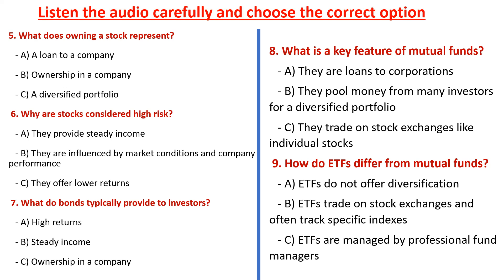Second, bonds. Bonds are loans made to corporations or governments in exchange for periodic interest payments plus the return of the bond's face value when it matures. Bonds are generally considered safer than stocks but offer lower returns. They provide steady income and are less susceptible to market fluctuations.